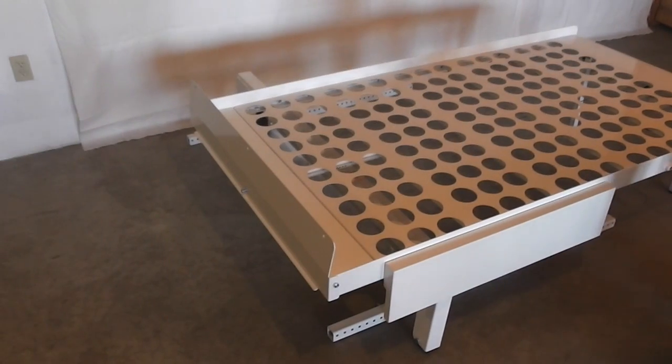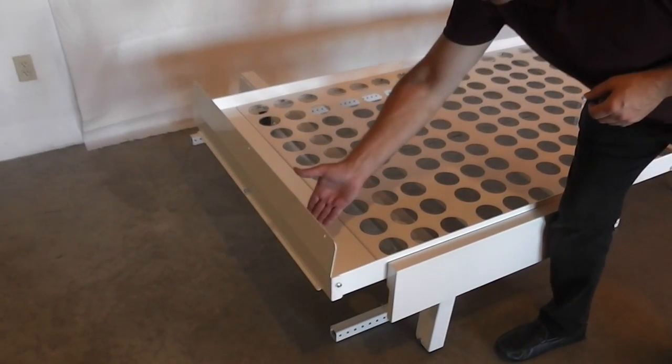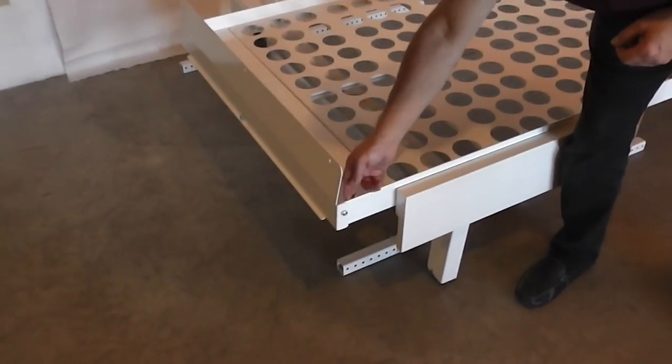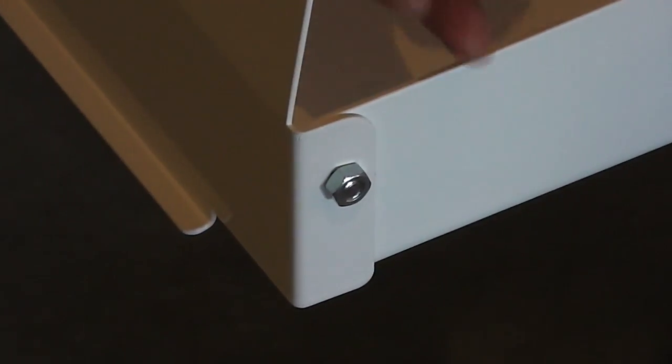The next step is to attach the mattress support system onto the platform using two carriage bolts. Notice the carriage bolts come from the inside out.